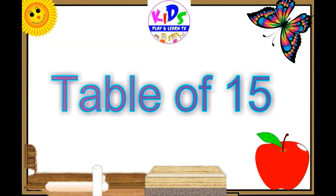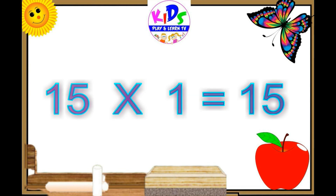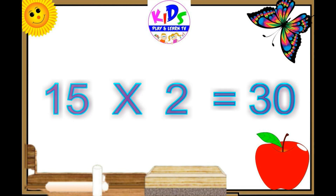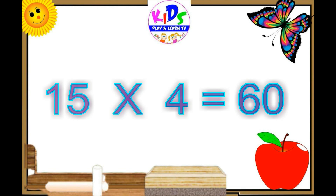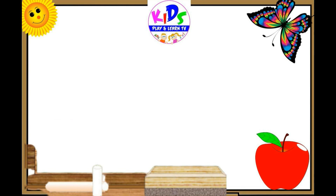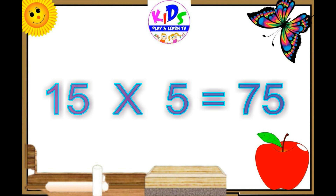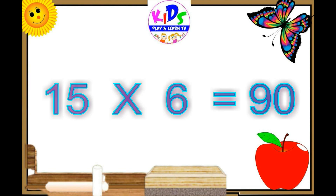Hello friends, let's learn the table of 15. 15 ones are 15, 15 twos are 30, 15 threes are 45, 15 fours are 60, 15 fives are 75.